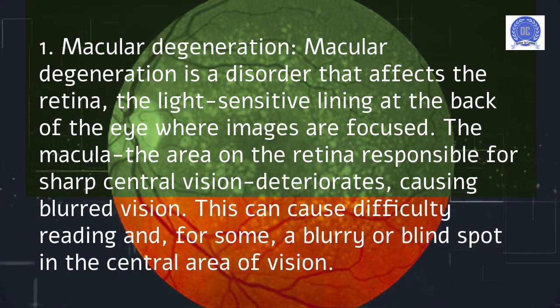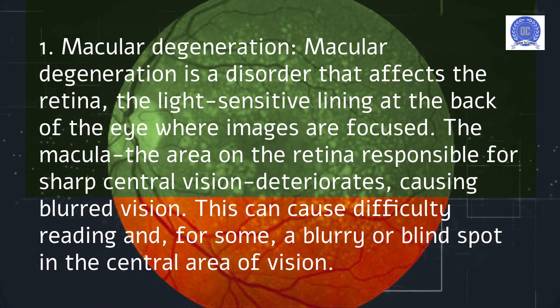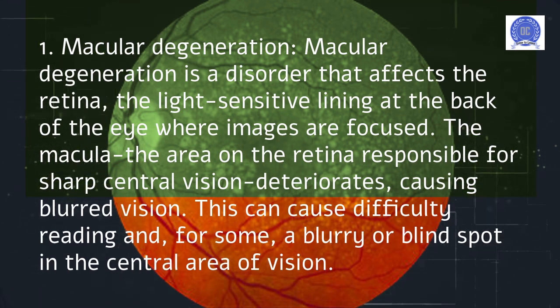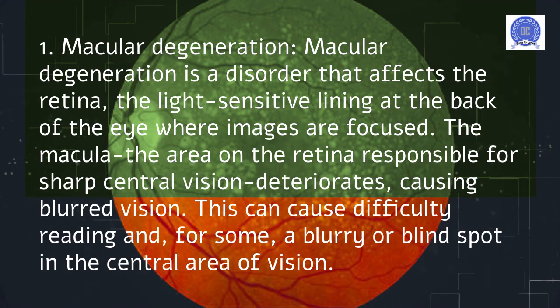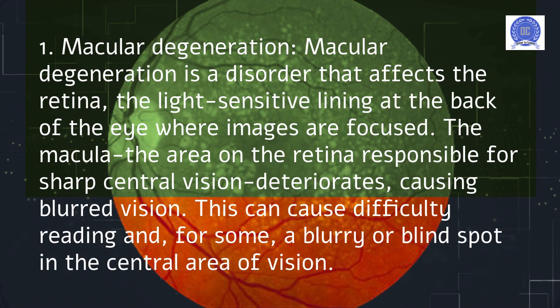Macular degeneration is a disorder that affects the retina, the light-sensitive lining at the back of the eye where images are focused. The macula, the area on the retina responsible for sharp central vision, deteriorates, causing blurred vision. This can cause difficulty reading and, for some, a blurry or blind spot in the central area of vision.